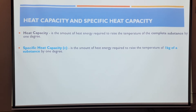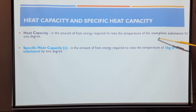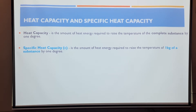What is specific heat capacity? Specific heat capacity is the amount of heat energy required to raise the temperature of 1 kilogram of a substance by 1 degree. The main difference is that specific heat capacity is specific to 1 kilogram of a substance, whereas heat capacity refers to the complete substance. The symbol we use for specific heat capacity is C.